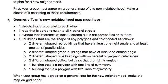Here's what your town must have: four streets that are parallel to each other, one road that is perpendicular to all four parallel streets, and one avenue that intersects at least two streets but is not perpendicular to them.